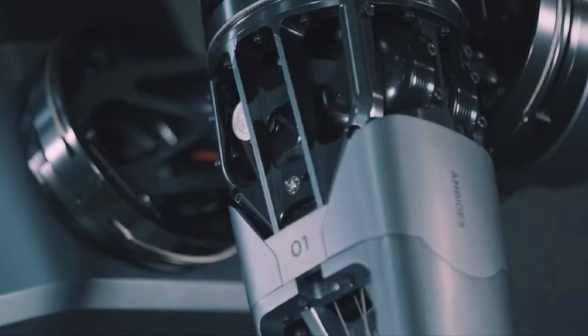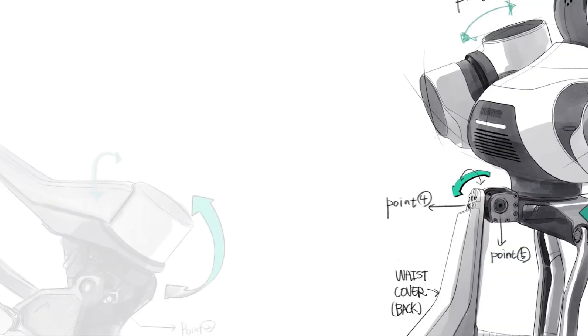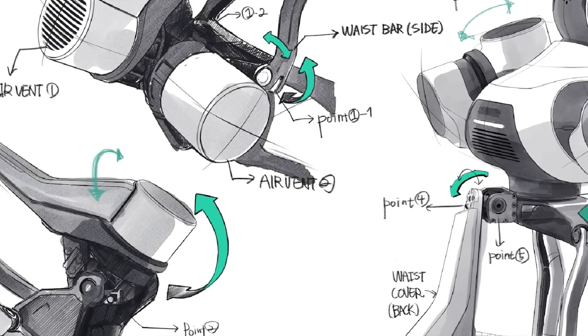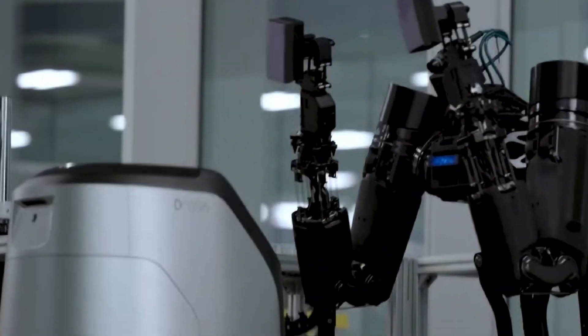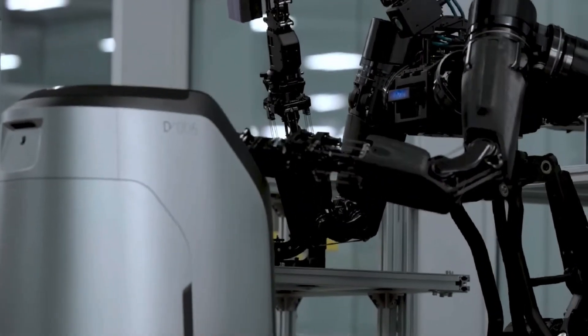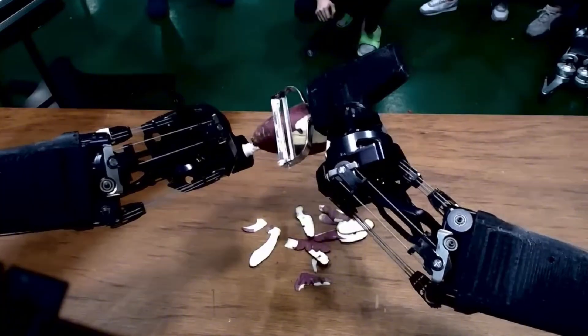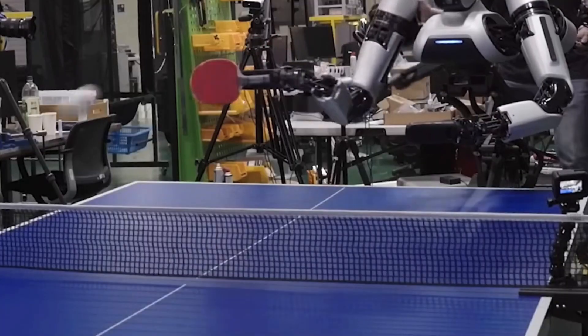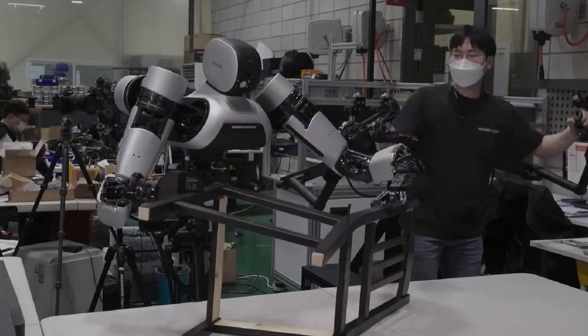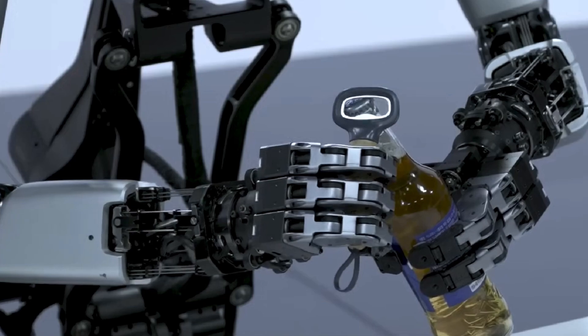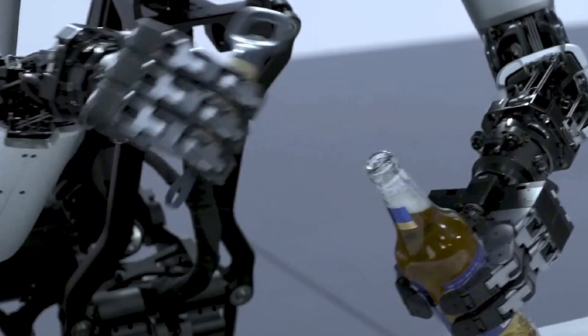A key feature of Ambidex is its ability to learn through demonstration. Engineers have created a tactile device that captures human motion and force parameters, allowing the robot to mimic human movements. This innovative approach enables Ambidex to master complex tasks after just one demonstration, using the data gathered during the learning process.